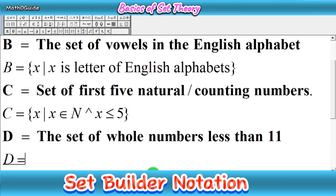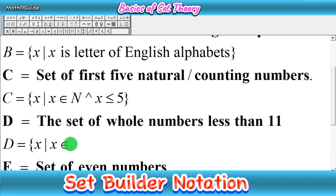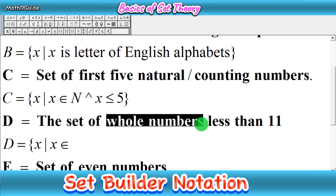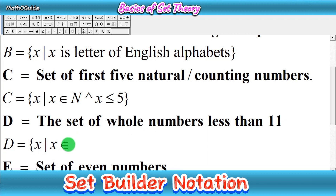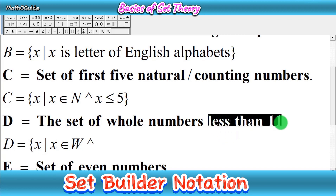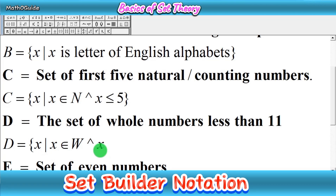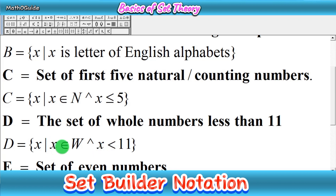Next we have set D — same method: X such that X belongs to. Here we have whole numbers, which we write as capital W. Then write the symbol 'and' because we have a limit: less than 11. Write the variable X again, then the strictly less-than symbol, and less than 11, then close the bracket. So this reads: X such that X belongs to W and X is less than 11 — the set of whole numbers less than 11 in set builder form.